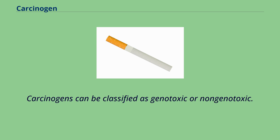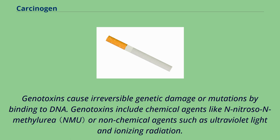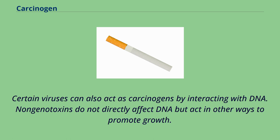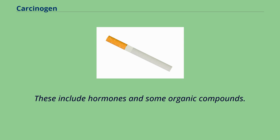Carcinogens can be classified as genotoxic or non-genotoxic. Genotoxins cause irreversible genetic damage or mutations by binding to DNA, and include chemical agents like N-nitroso compounds and methylurea, or non-chemical agents such as ultraviolet light and ionizing radiation. Certain viruses can also act as carcinogens by interacting with DNA. Non-genotoxins do not directly affect DNA but act in other ways to promote growth, and include hormones and some organic compounds.